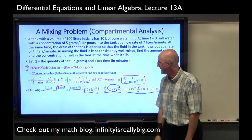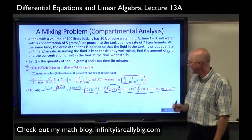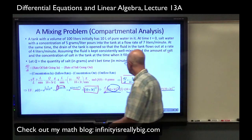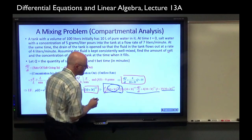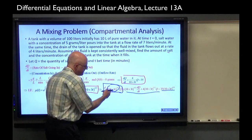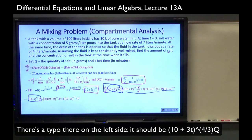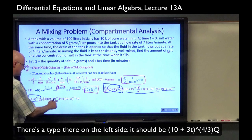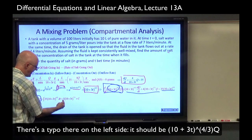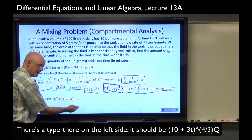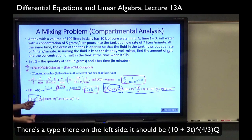Integrate both sides. The left side — integrated derivative gives you the function — the integral and d/dt cancel, giving q·(10+3t)^(4/3). On the right, we integrate 35(10+3t)^(4/3). Bring down 7/3 and differentiate to check: 35/3 times (10+3t)^(4/3) times 3 — the 3's cancel — giving back 35(10+3t)^(4/3). Correct. Here you do want a +C because we want the general solution to solve the initial value problem.